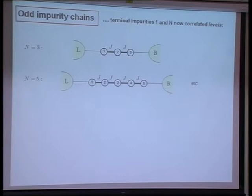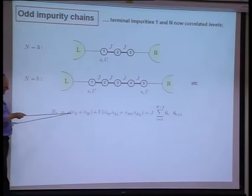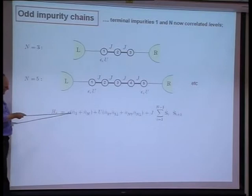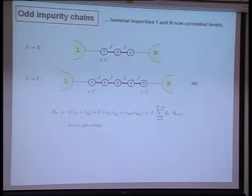So far I've talked about odd impurity chains where everything is a spin-one-half. Now let's look at the case where the terminal N sites — sites one and N — are Anderson-like levels with level energies epsilon and charging energies U. The Hamiltonian reflects a level energy epsilon tunable by gate voltage, a charging energy U, and the remaining interior sites are spin-one-half objects antiferromagnetically exchange-coupled.